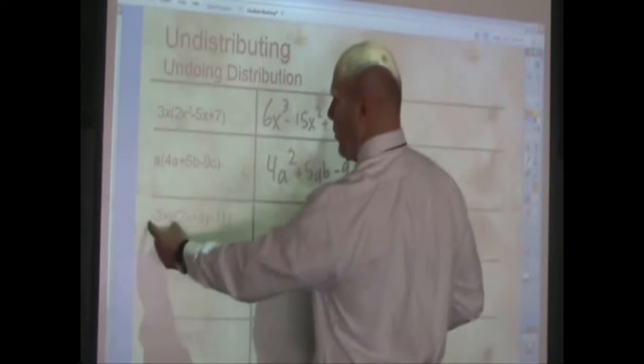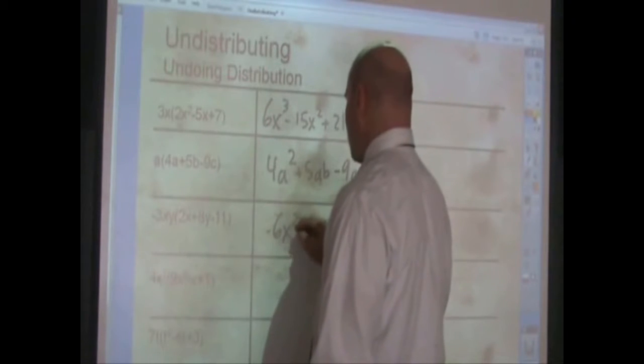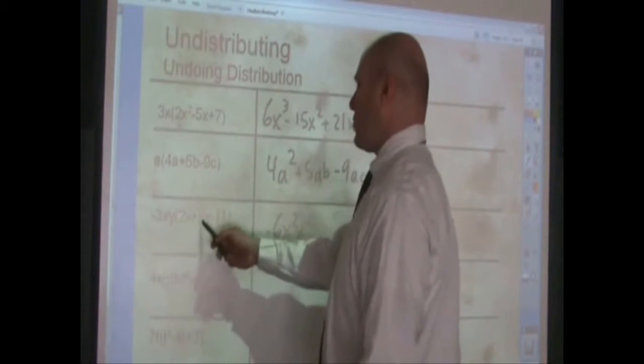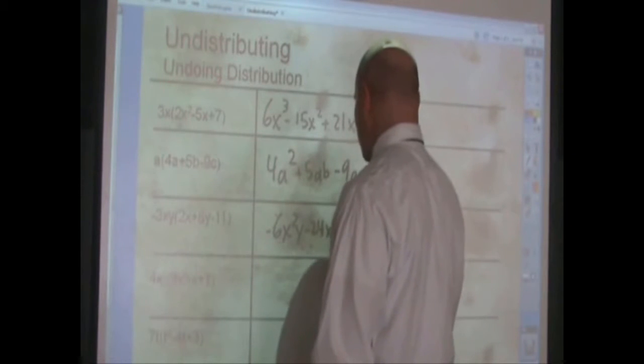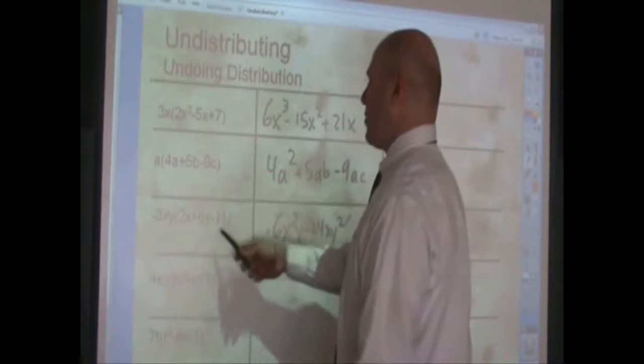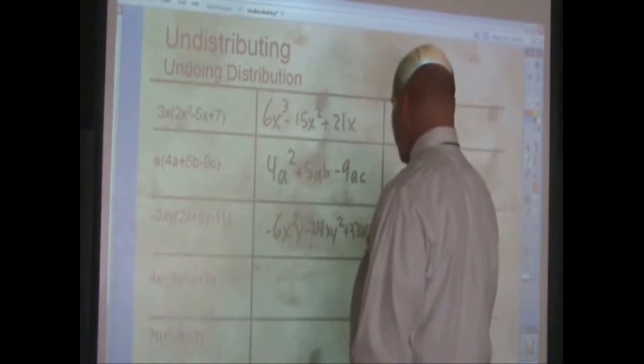This one's a little bit more complicated, negative 3xy times 2xy is negative 6x squared y. Negative 3xy times 8y is negative 24xy squared. Negative 3xy times negative 11 is plus 33xy.